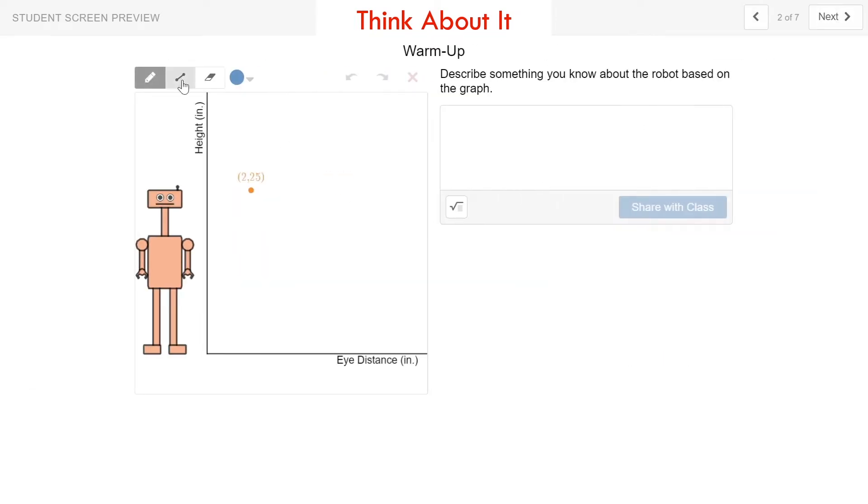On this next screen, it asks us to describe something you know about the robot based on the graph. So here is the point (2,25). If I draw a vertical line straight down to the x-axis, I can see that the eye distance should be 2 inches, because the first point, or the first number in an ordered pair always corresponds to the x-axis, in this case, the eye distance. I can also see that the robot's height should be 25 inches, because the y-coordinate of 25 corresponds to how tall the robot is.